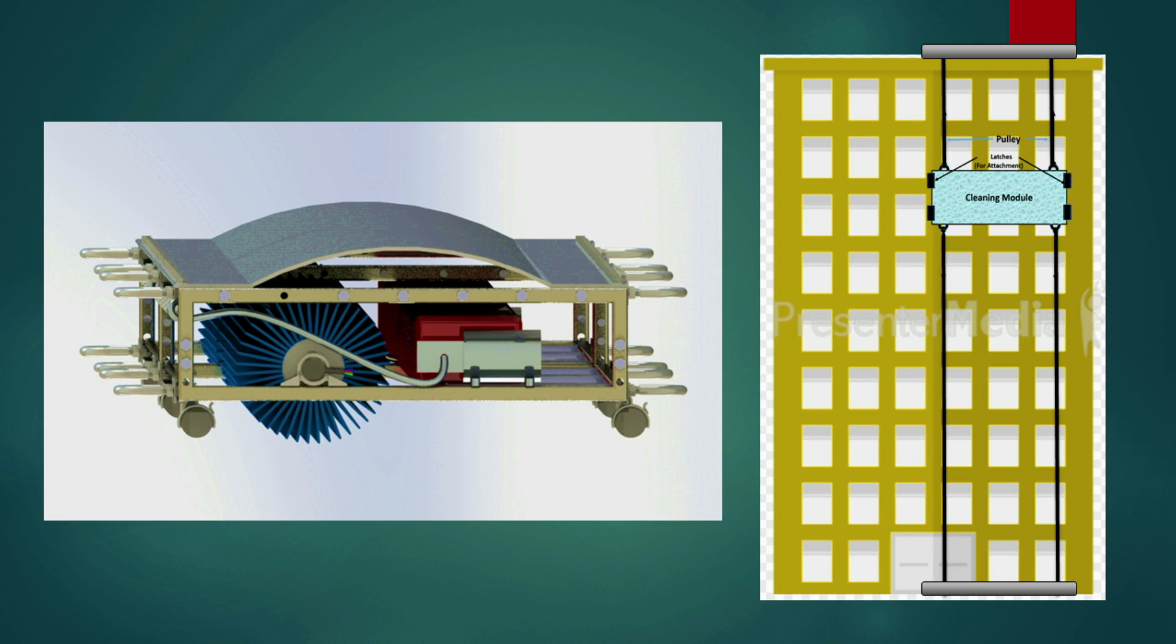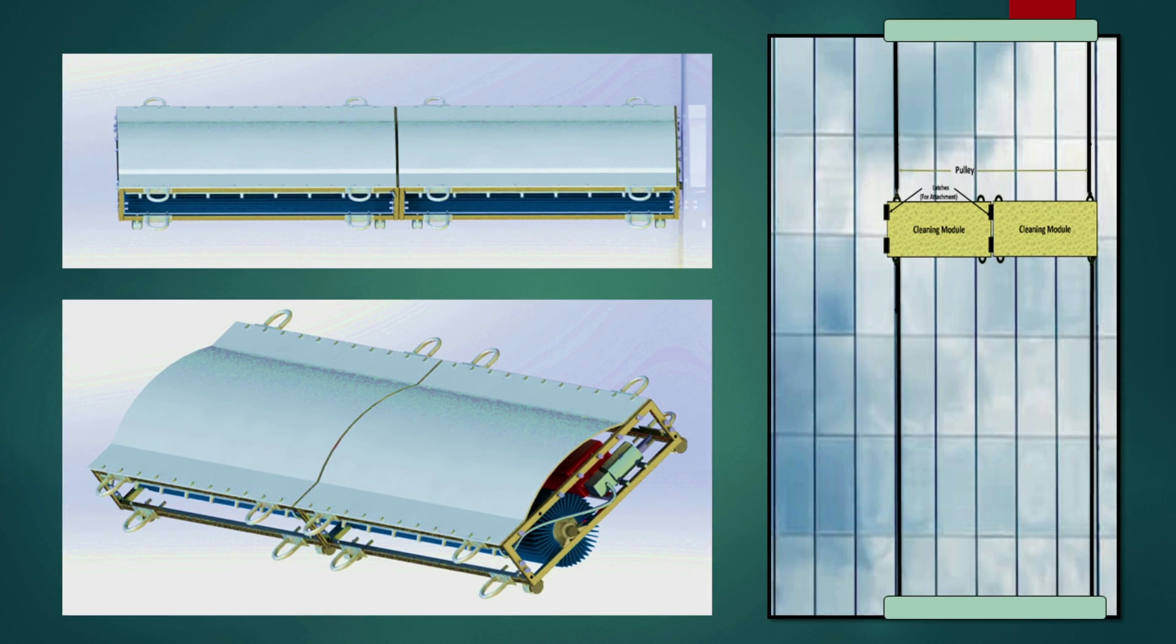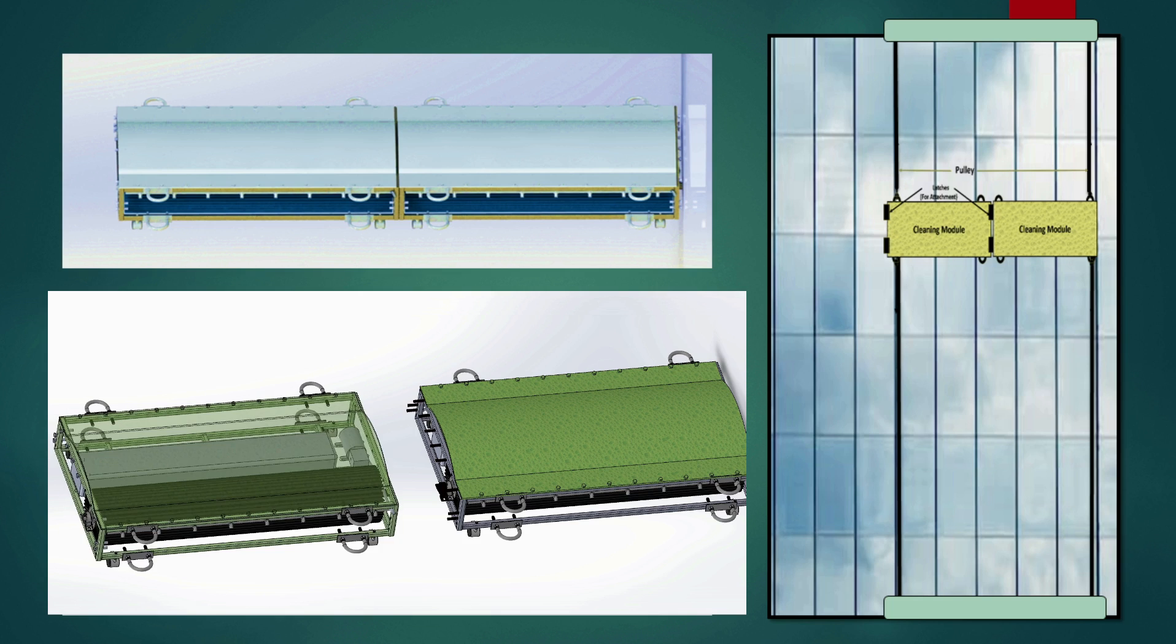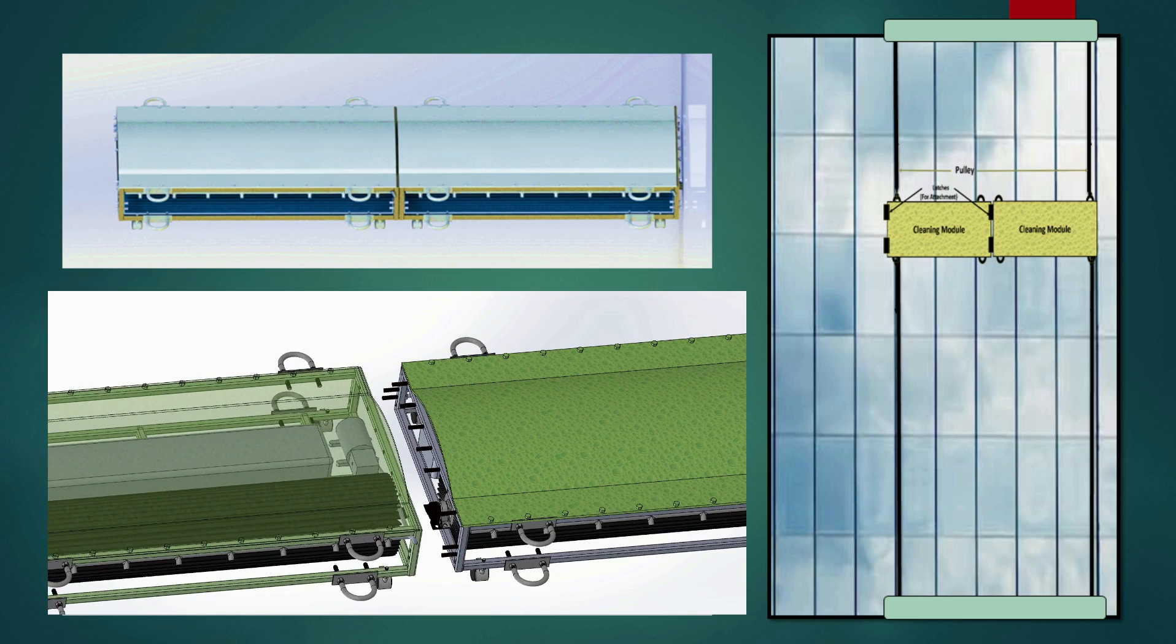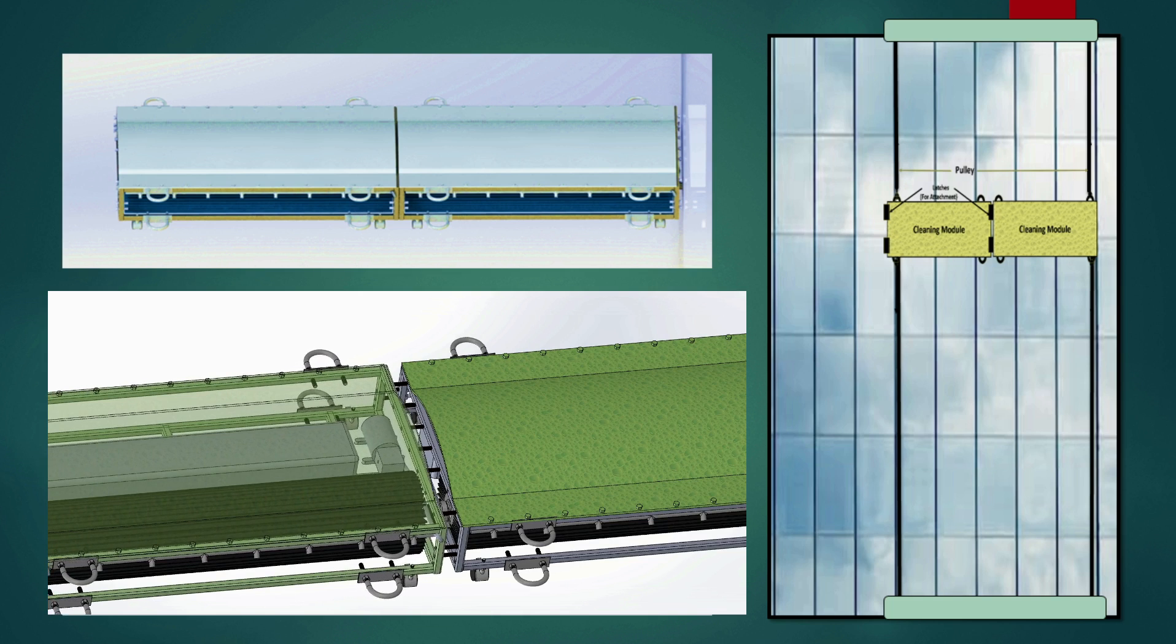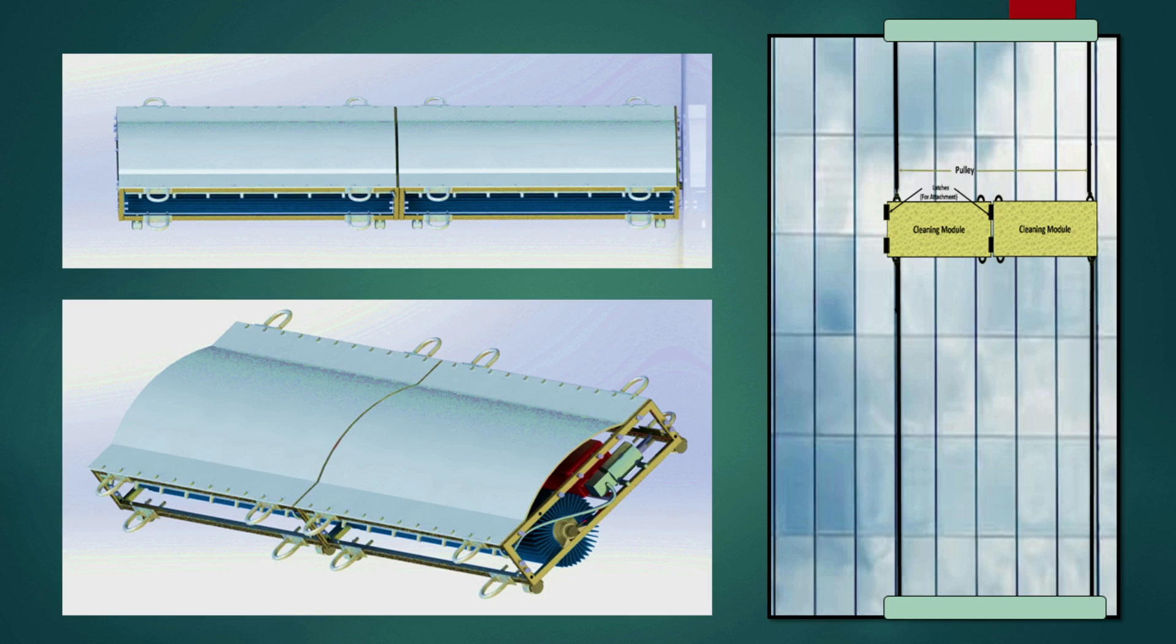For open buildings where there is sufficient space for pulley installment, we can use design one that consists of the cleaning module attached with pulleys. For large buildings where the window size is large compared to the normal window size, we can use design two that consists of two attached cleaning modules that increase the total cleaning area and thus reduces overall cleaning time.